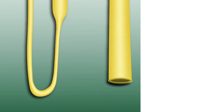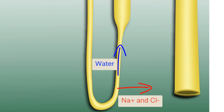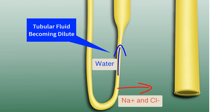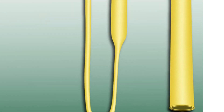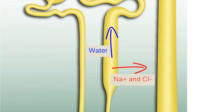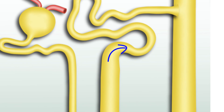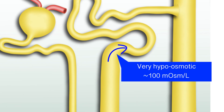As the fluid moves up the thin ascending limb, sodium and chloride are passively reabsorbed and water is left behind, making the tubular fluid more dilute. This dilution continues at the thick ascending limb, where active transport of sodium and chloride removes solutes from the tubular fluid, while water is retained due to the lack of aquaporin. By the time the tubular fluid leaves the loop of Henle, it is very hypoosmotic to blood plasma — approximately 100 milliosmoles per liter.